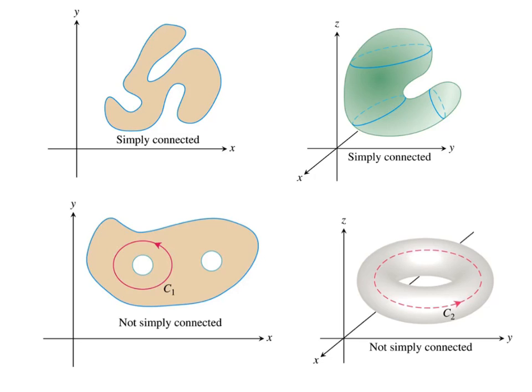This shape is called a torus, kind of like a donut. And if I had a path going around that hole in the domain, then I could not contract the path to a point without leaving the domain. So that's what simply connected versus not simply connected refers to.